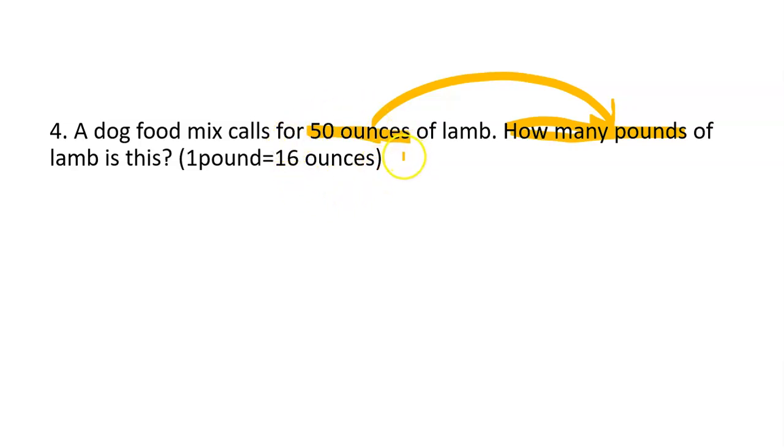So if you know what operation you should do, whether it should be 50 divided by 16 or 16 divided by 50, or maybe it's 50 times 16. But if you know which operation it is, what you're supposed to do, you can go ahead and do it.